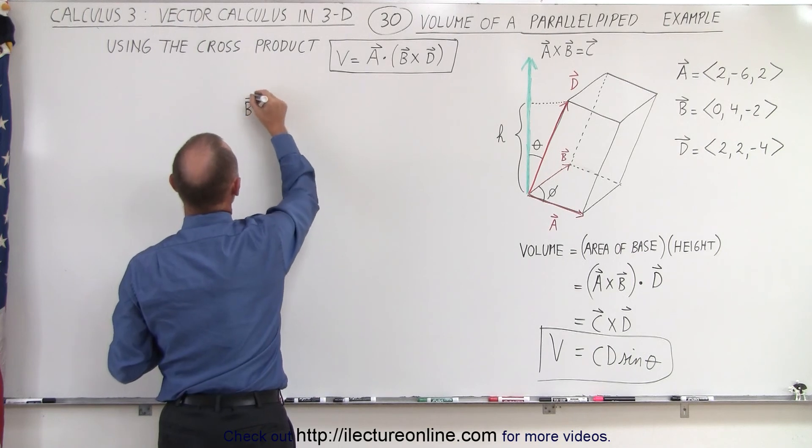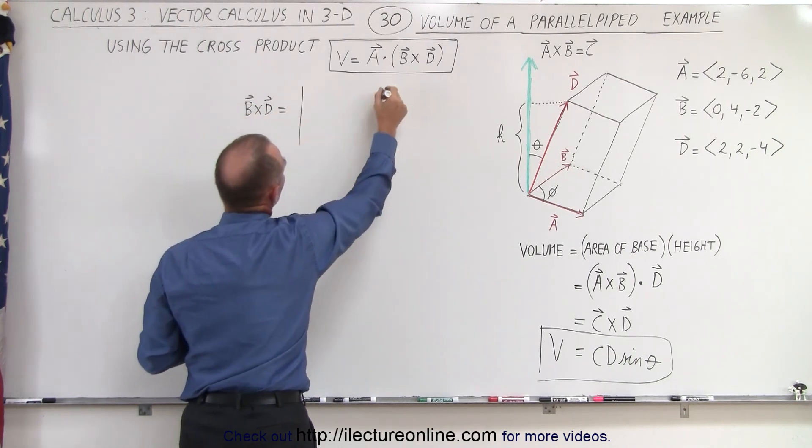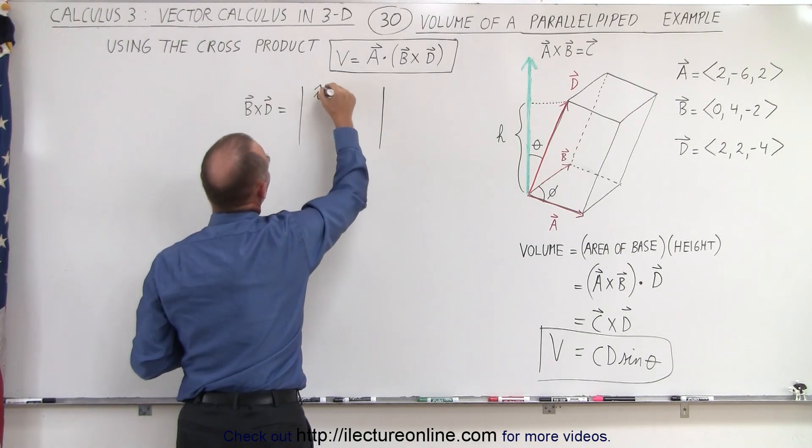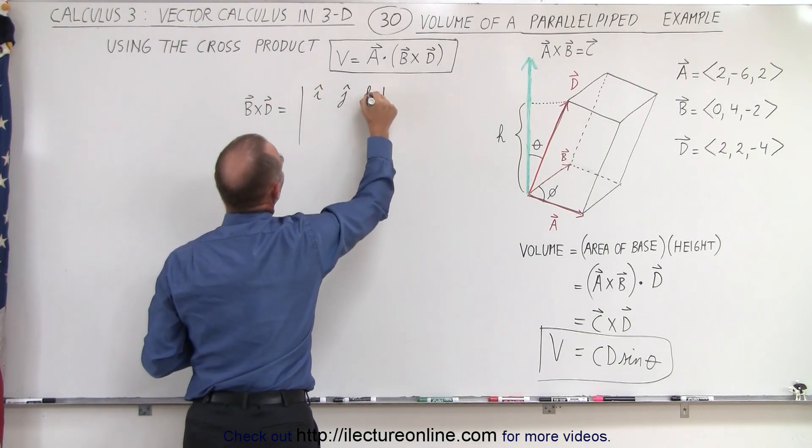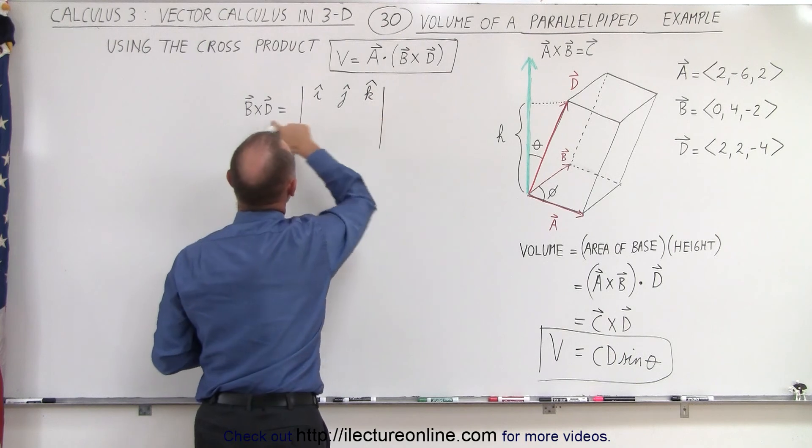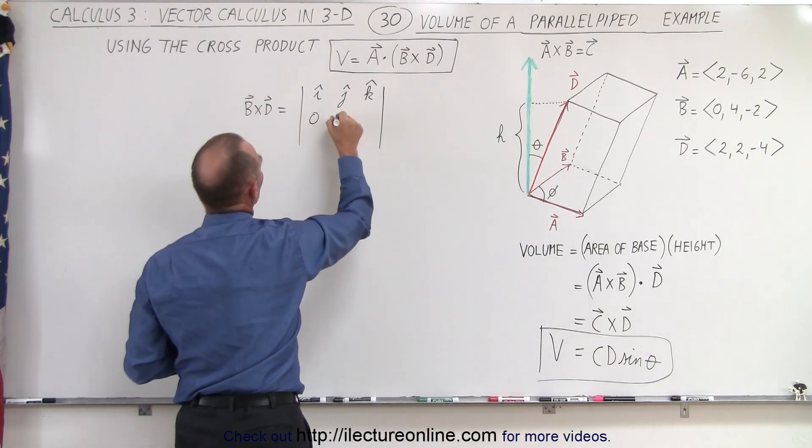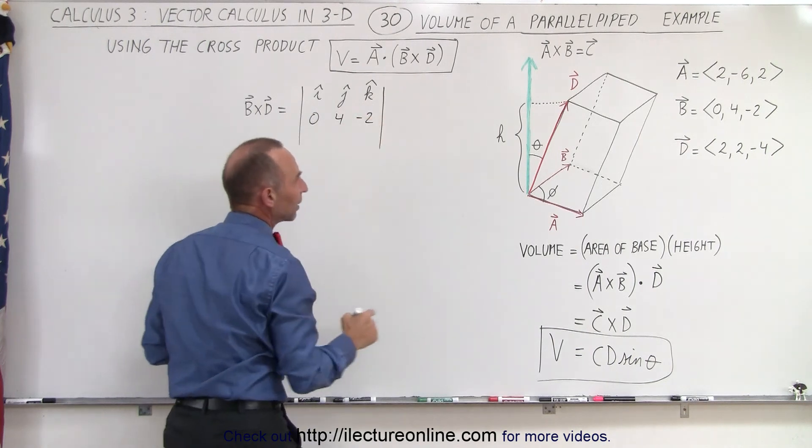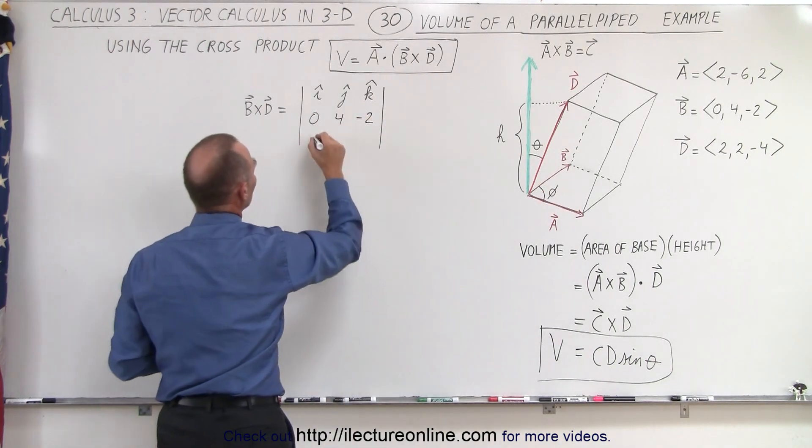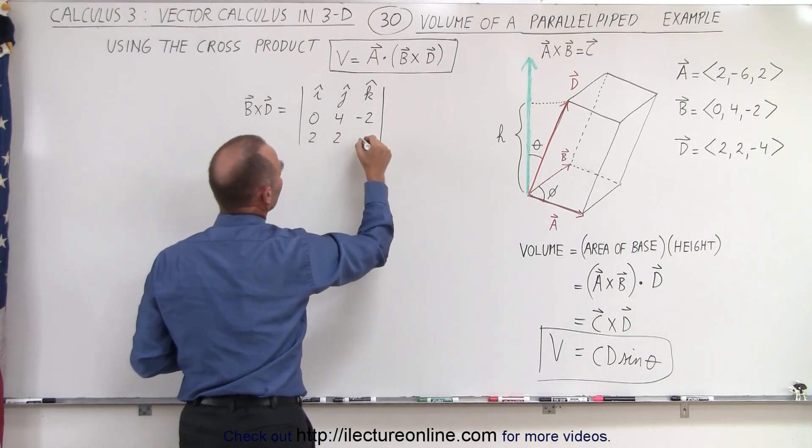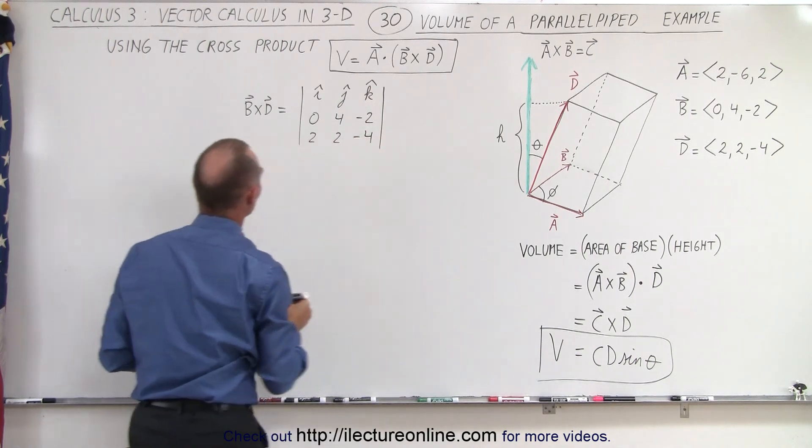So let's go ahead and take the cross product of B and D as defined by those two vectors right there. So B cross D is equal to the determinant of i, j, and k. Now the components of the B vector, which is 0, 4, negative 2, and the components of the D vector, which is 2, 2, and negative 4. Alright, let's go ahead and do that first.